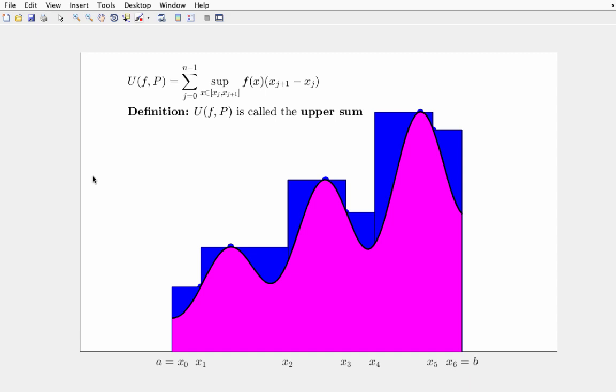Now, we can see from the pictures here that the upper sum is greater than or equal to the integral if the integral exists. Because I'm necessarily overestimating the area under the curve over each of these subintervals.